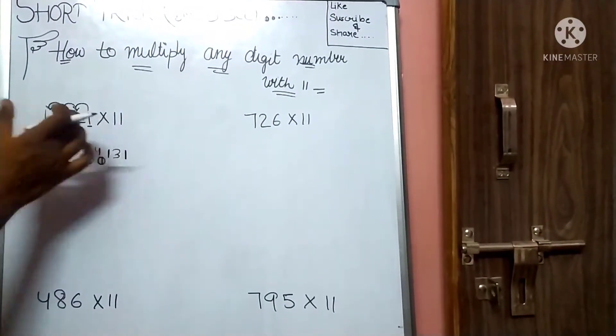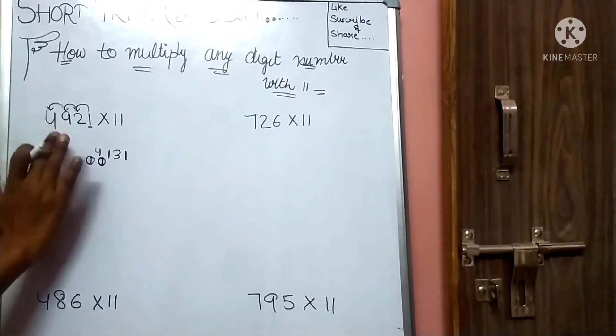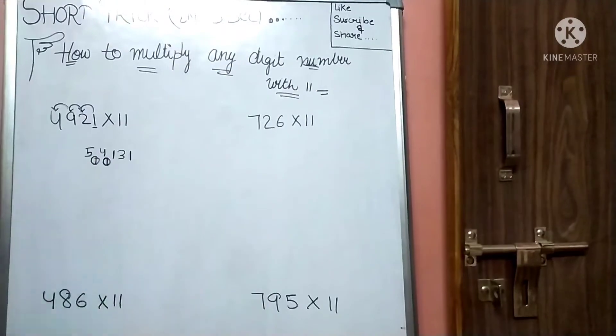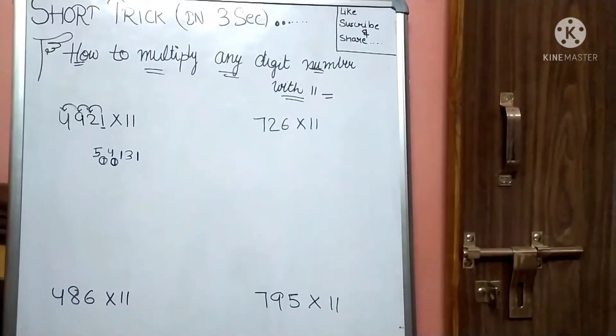So what do we do? First, last digit as it is. Now I will keep it as it is, but I will add carry. So I will add carry here. So what will it be? 4 plus 1 equals 5.